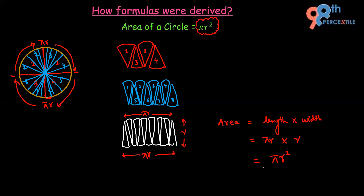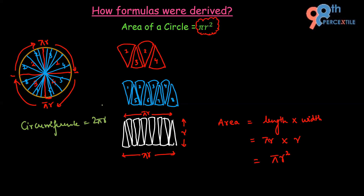So this is the derivation for the area of a circle. But now the question comes: how is the circumference of a circle 2πr? I used this formula here — that the complete boundary, also called circumference, is 2πr, and that is why half of it is πr. How the circumference of a circle is 2πr — this we will learn in the next part of the series. Till then, take care and I hope you liked this video. Bye bye, thank you!